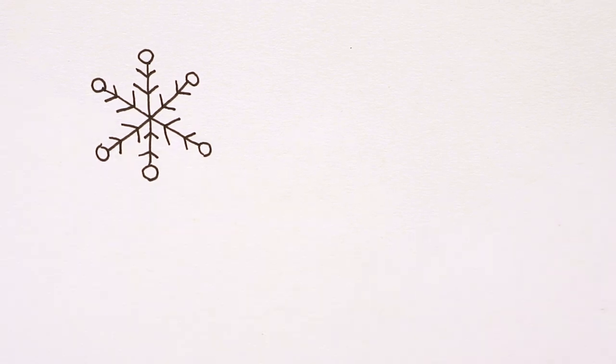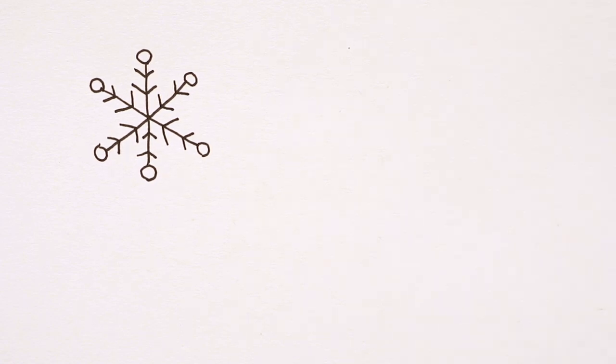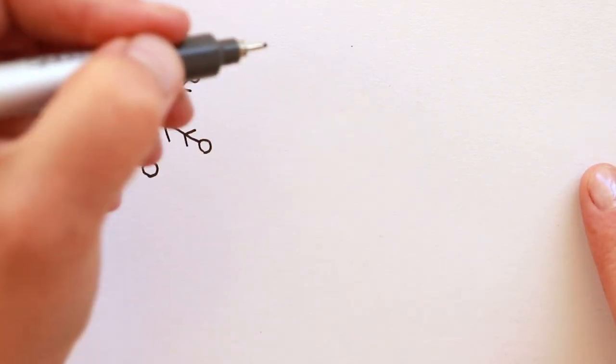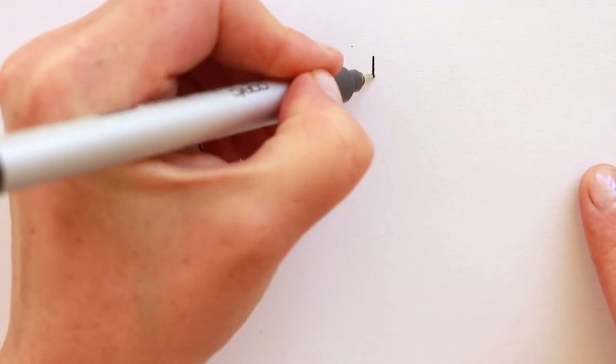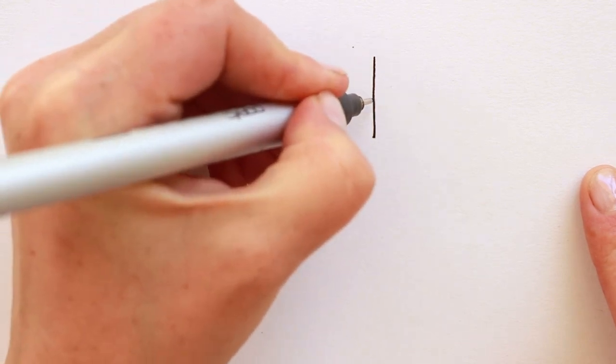Okay second type of snowflake will be a little bit more complicated. We'll add a center decoration. So again draw a vertical line, find the center, slice your pizza pie into six pieces.